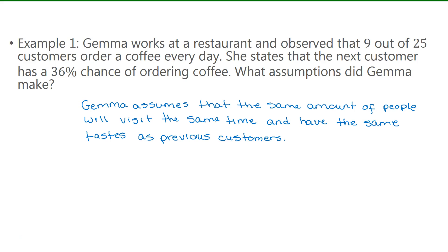There are many factors that can affect the amount of people that visit, the time that people visit, and so on. For example, if people visit later in the evening, they may not want to have a coffee that late. If it's a different day of the week, like a Saturday or Sunday, people may not have a coffee — they might have one at home instead. The weather can certainly affect whether people are going to have a coffee or not. If the weather is really bad, they may not go out, or if it's really hot, they may want to order a cold drink instead. So there are many things that can affect this, and there are many assumptions that Gemma is making when she made that statement — she is assuming that all conditions are the same as previous times when she observed, which is not necessarily true.